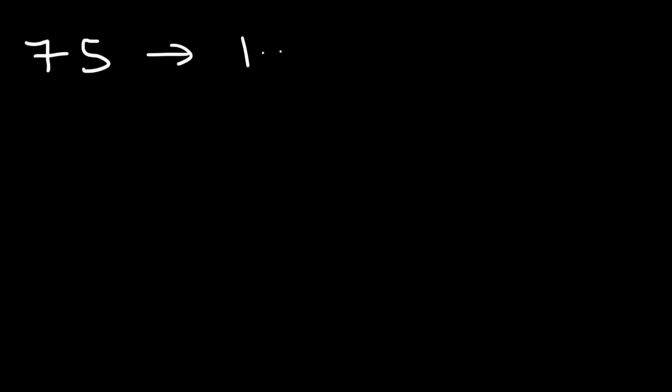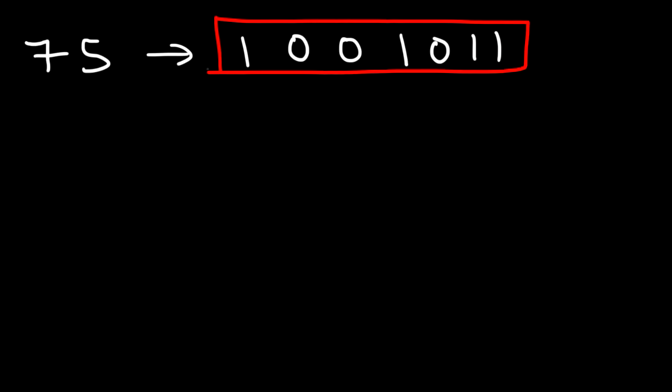Now the second method involves successive division. So let's go over the three examples that we did using the second method. This allows us to confirm our answer. In the first example, we said that 75 is equal to the binary number 1001011. Let's confirm that using successive division.